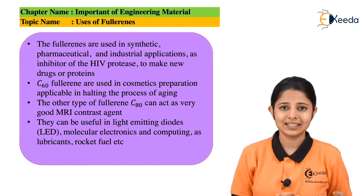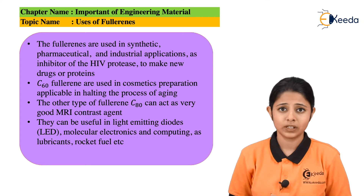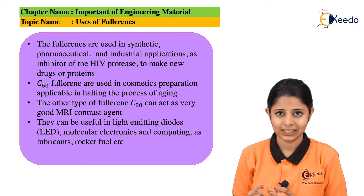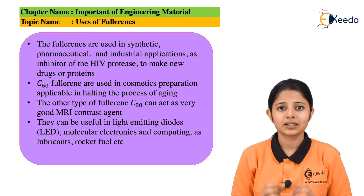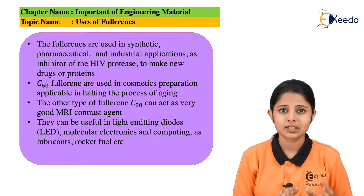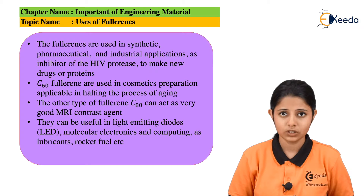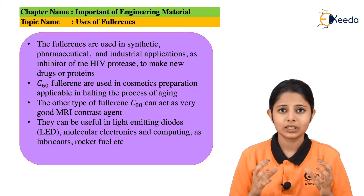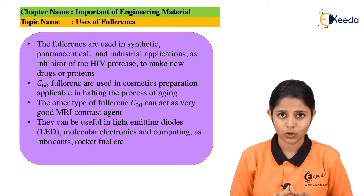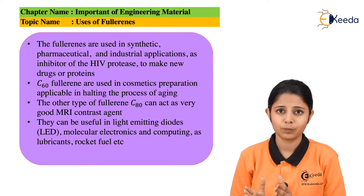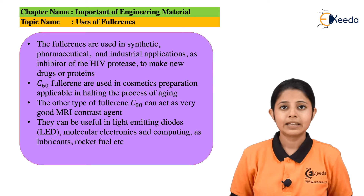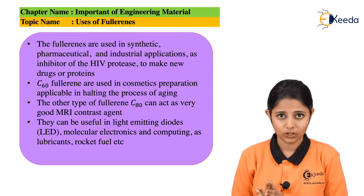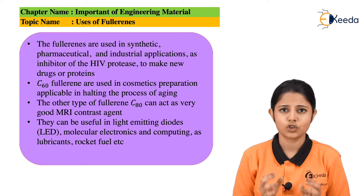Apart from C60, there are certain other Fullerenes as well. There are types of Fullerenes which are C80, meaning Carbon-80. So instead of having 60 carbons in the entire molecule, we will have 80 carbons. Because of these 80 carbons present in the molecule, it becomes another type of Fullerene. These C80 molecules, these other types of Fullerenes, are used as MRI contrast agents.